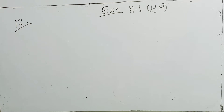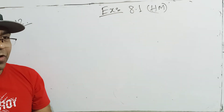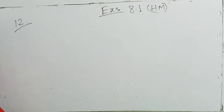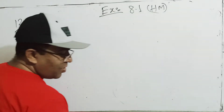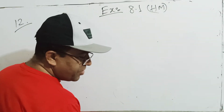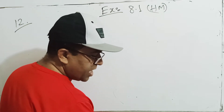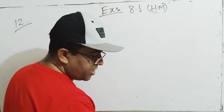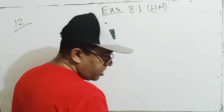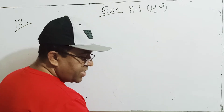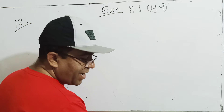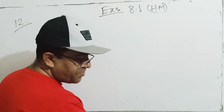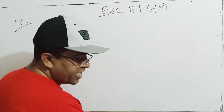8.1 Higher Math, Problem number 12. The first step is: a person jogging on a circular track at 6 km per hour traverses a line segment in 36 seconds, which subtends an angle of 60 degrees at the center.